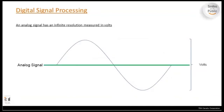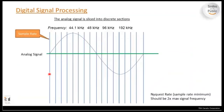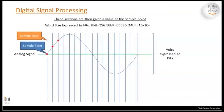Starting with the very basics of digital signal processing: we have an analog sine wave — your positive wave, your negative wave. Eventually we've got to digitize that. Analog signals are placed into discrete sections — that's your sampling rate, where the digital chip is looking at that analog wave coming in and taking slices of it. Each section is given a value at the sample points. Word size is expressed in bits: 8-bit, 16-bit, 24-bit — higher bits means more precise conversion.